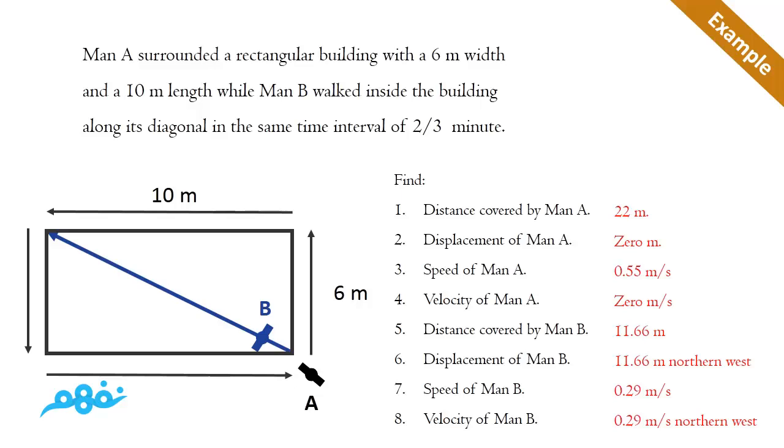that two-thirds of a minute equals 40 seconds. The distance covered by Man A equals the perimeter of the rectangular building, which equals (6 + 10) × 2 = 22 meters. While the displacement equals zero. Why zero?